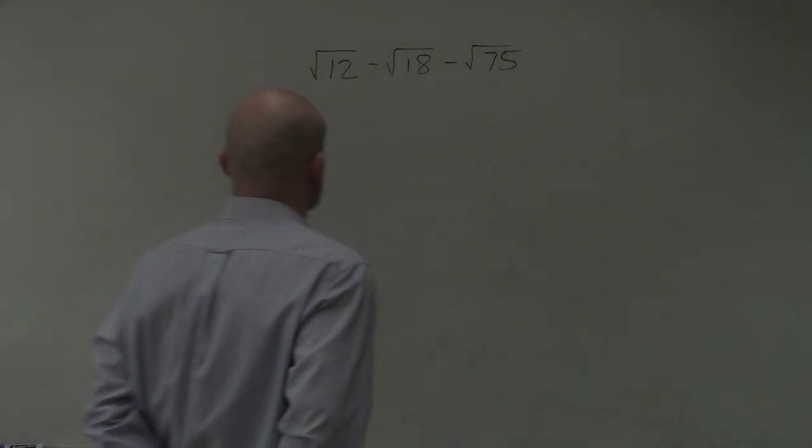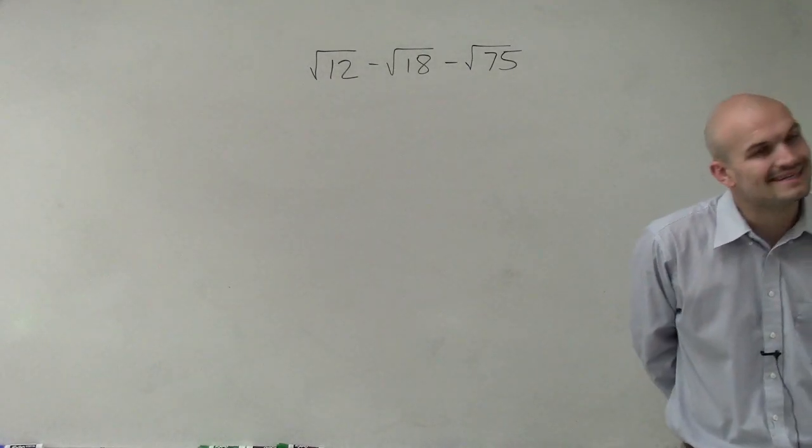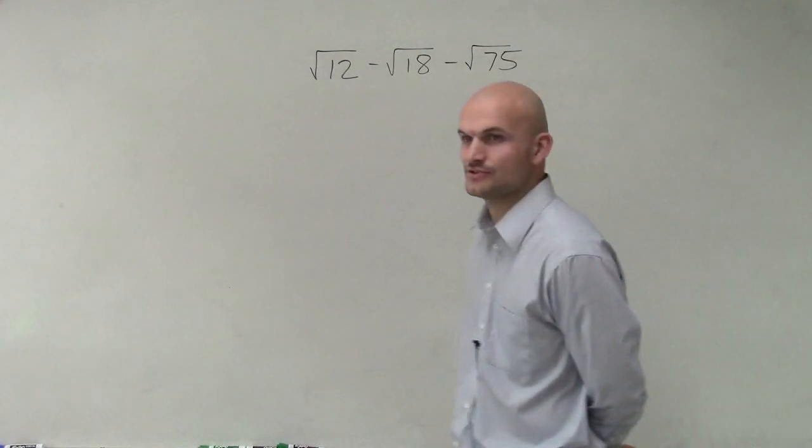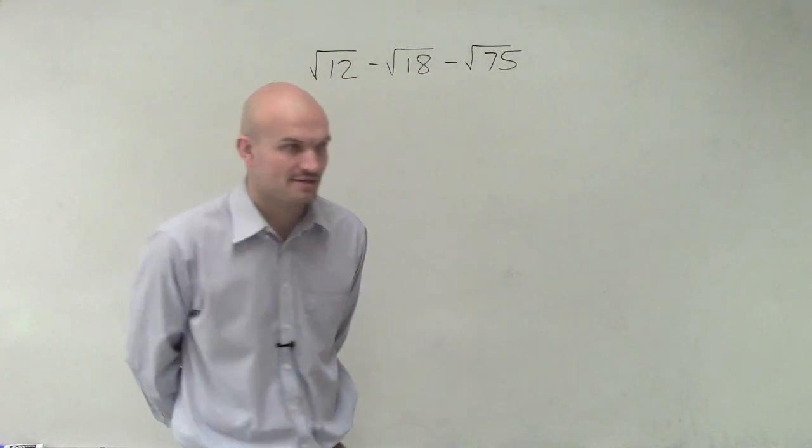For the next problem, I have the square root of 12 minus the square root of 18 minus the square root of 75. Ladies and gentlemen, we cannot add and subtract radicals when they do not have the same radicand. We have to make sure that they are exactly the same.